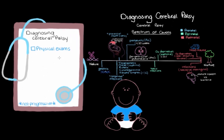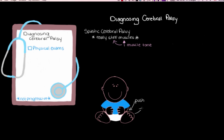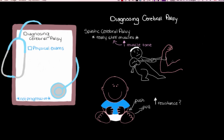Looking for more signs of cerebral palsy, we recall that the most common type is spastic cerebral palsy, where one of the main findings is really stiff muscles due to increased muscle tone. We can push and pull on the child's arms and legs to see if we feel more resistance than normal — similar to trying to move someone's arm while they're flexing their bicep. In spastic cerebral palsy, it's as if the muscles are permanently on and resisting your efforts to move them.